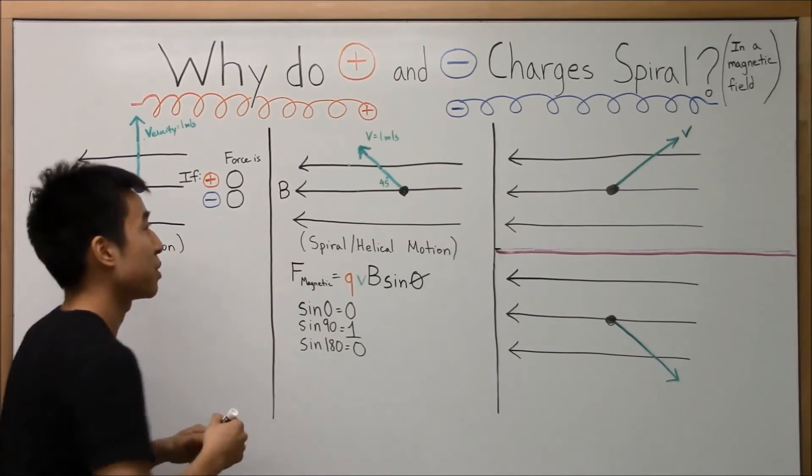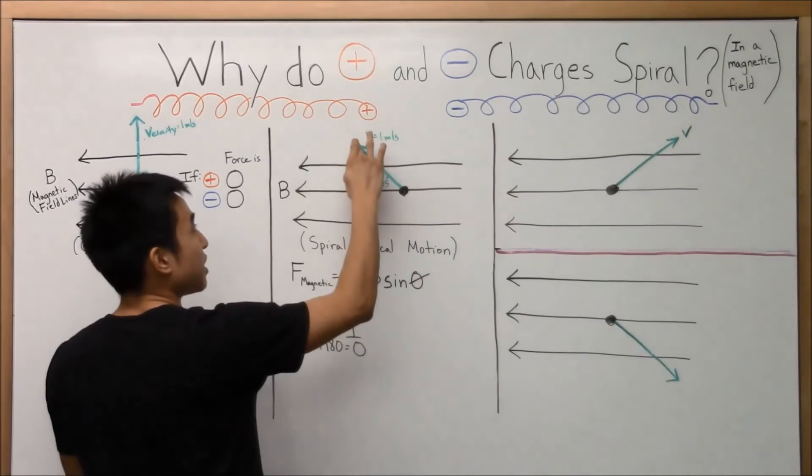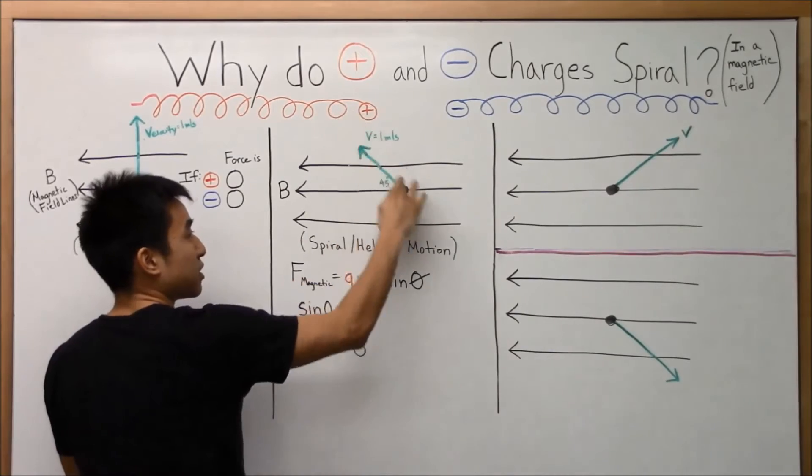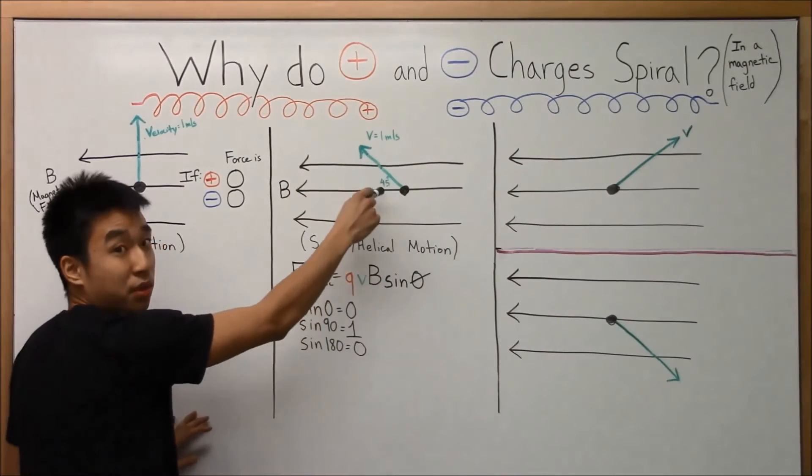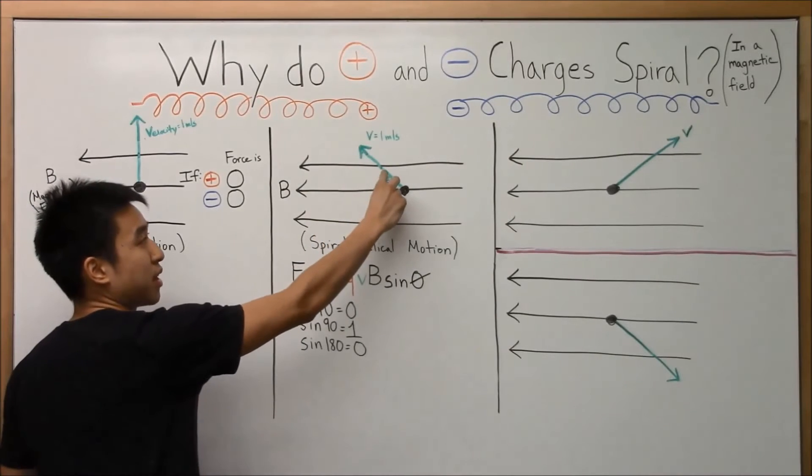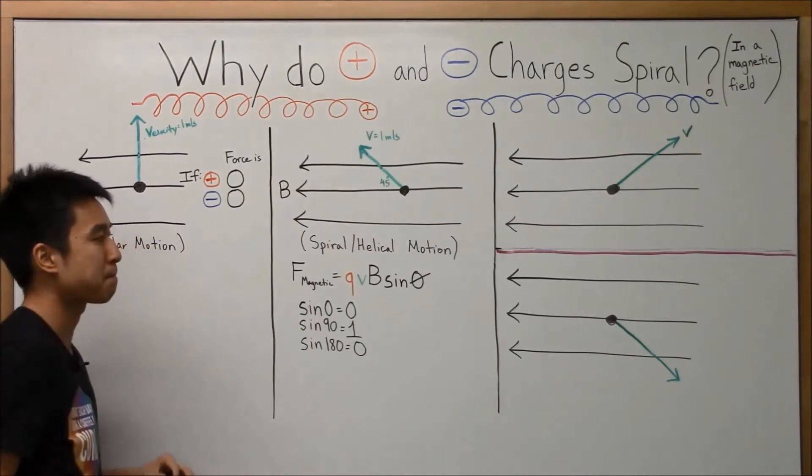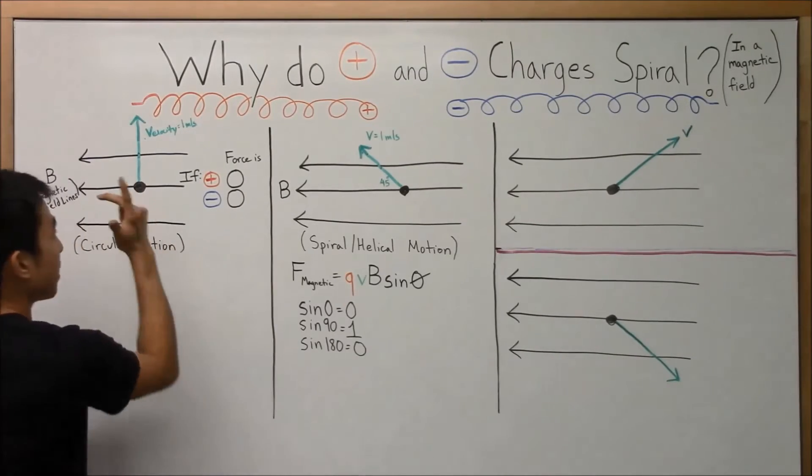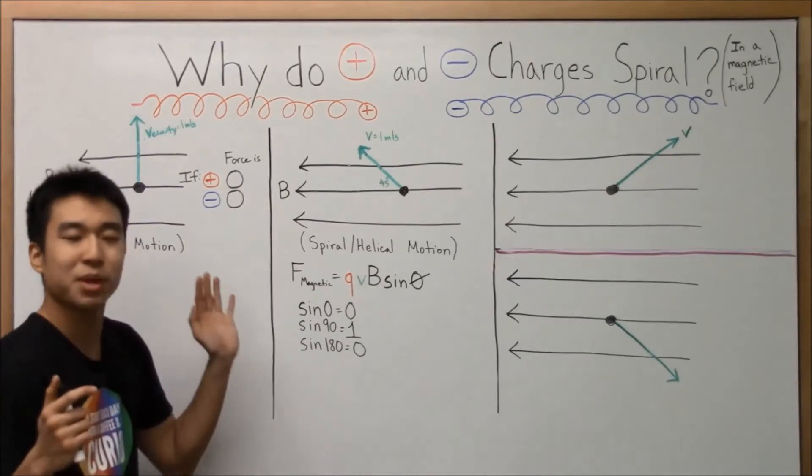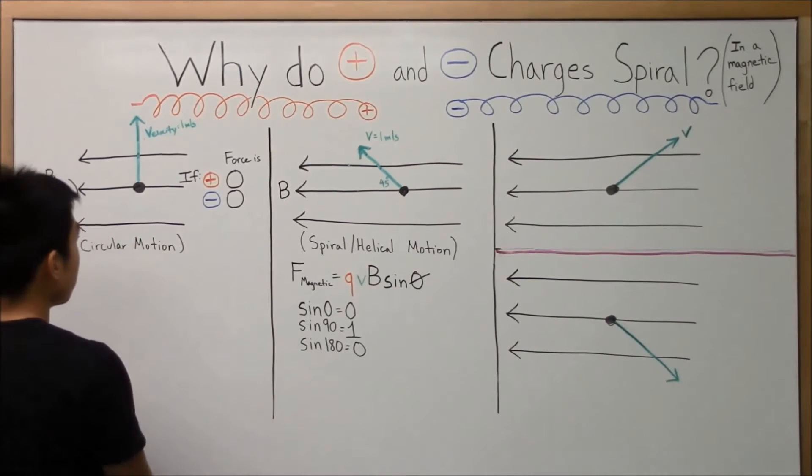And I have seen problems where they purposely ask you that same question, but they'll purposely give you a bigger velocity here on this particle, but at a smaller angle. And you might think that this experiences a smaller force because the angle's smaller, but the larger velocity compensates for it. All right. So anyways, right-hand rule, we got that down. Back to the main point about this video, spiraling of the charges.